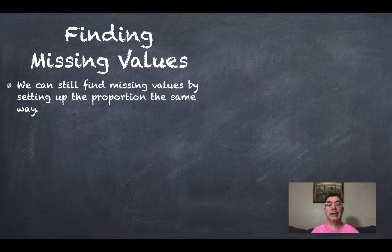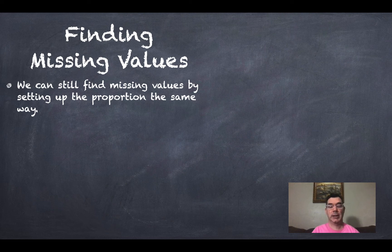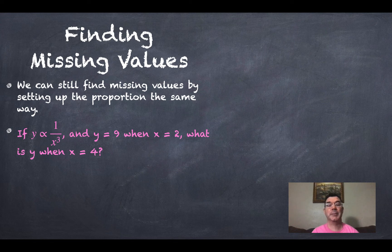And again just like with the other types of variation we can find missing values. If I know one of the pairs and I know one of the values of a second pair I can find the missing value.